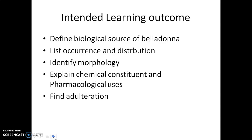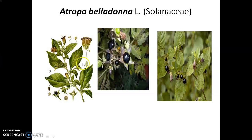Here you can see the herbarium of the Belladonna plant and the Belladonna berry. Atropa belladonna belongs to family Solanaceae. It is a very old drug. The genus name Atropa is derived from the name of a Greek goddess of Destiny — one of the three Fates mentioned in Greek mythology — specifically Atropos.